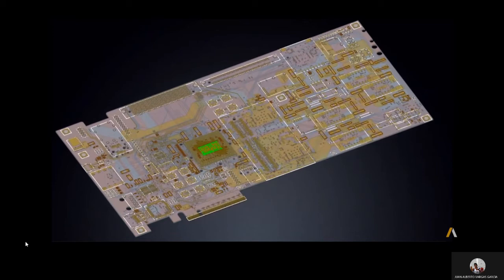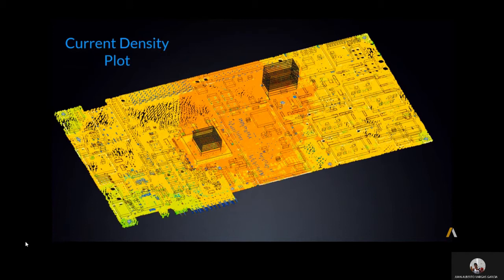This virtual prototype consists of an FPGA package mounted on a PCB. To account for current flow effects, a DCIR simulation is performed in SI-WAVE. The results show the current density in the design.